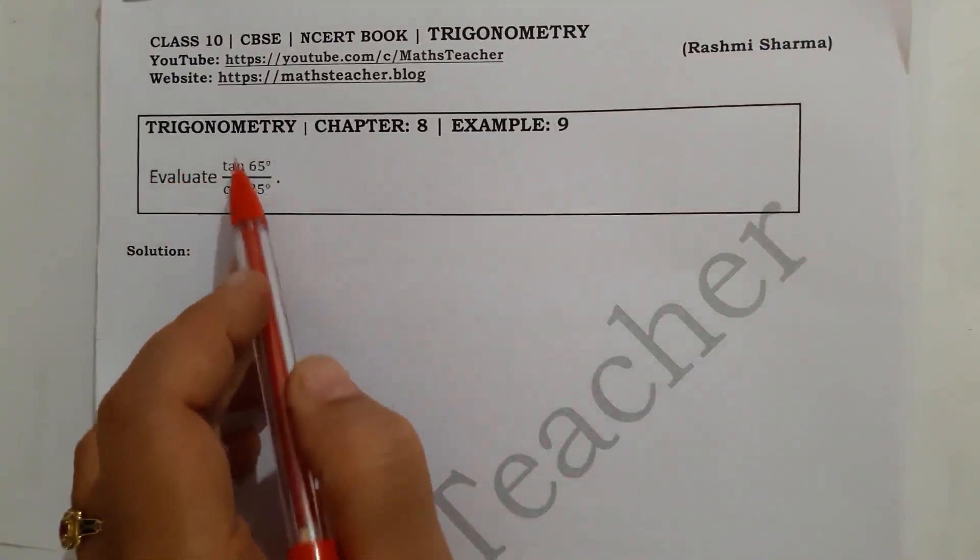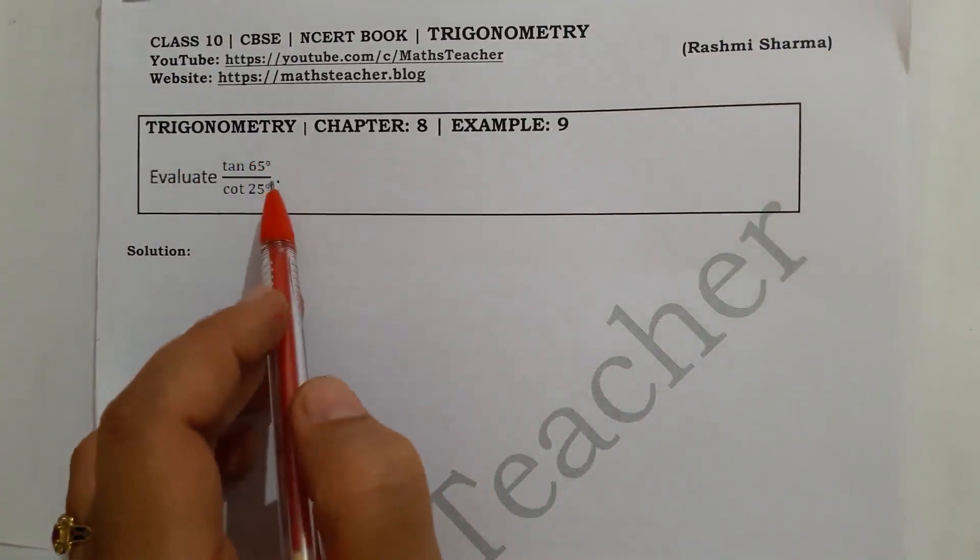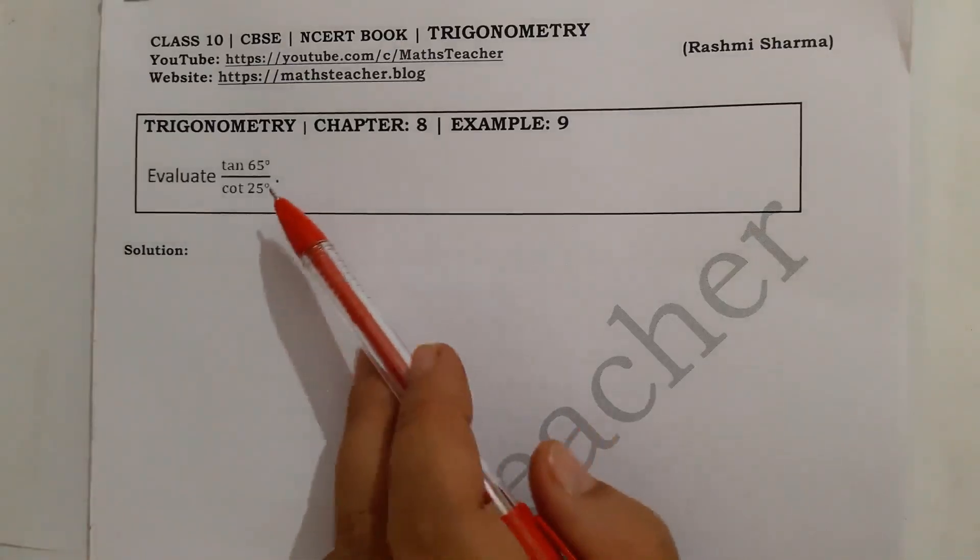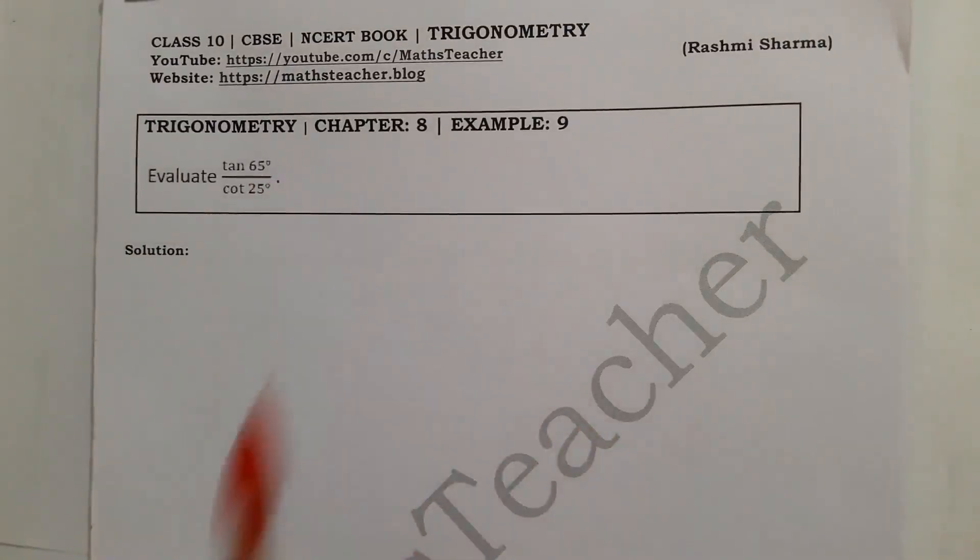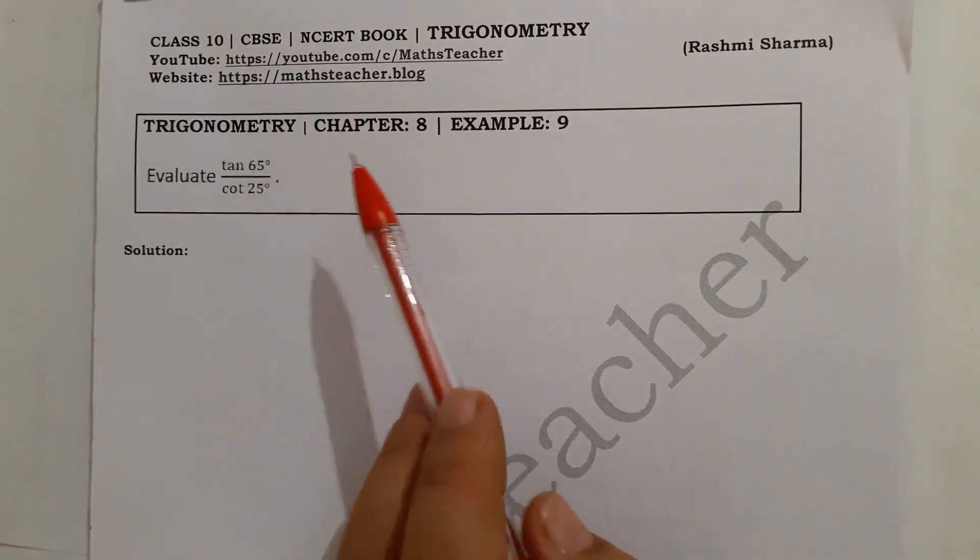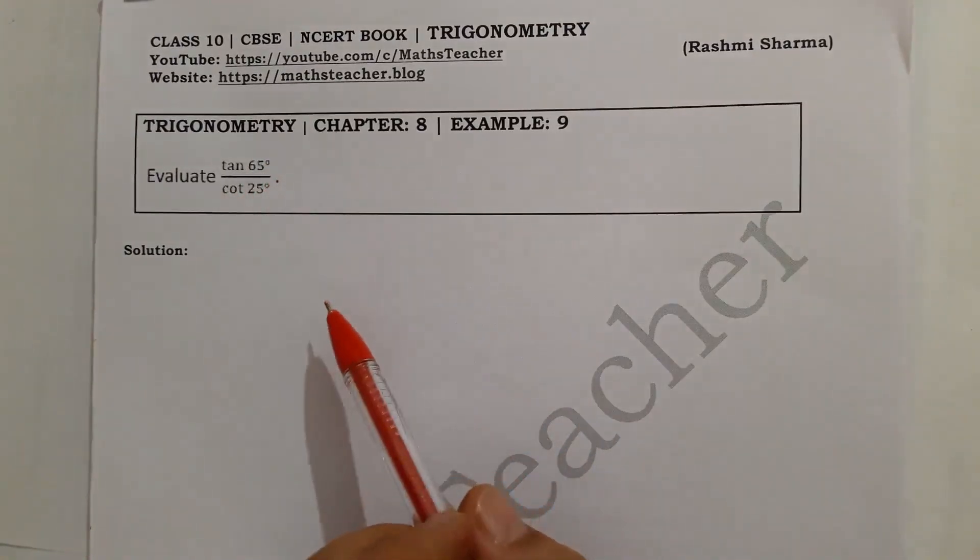Here we are looking at this angle and we don't know the value of these angles. So this is our complementary angle. Why is this complementary angle? Because 65 plus 25 is 90. So since we don't know the value, we will solve using complementary angles.